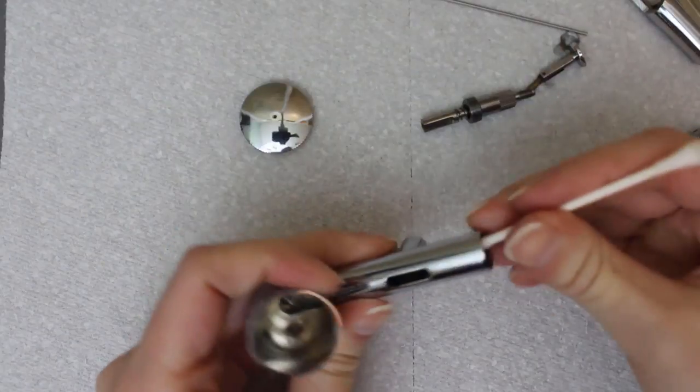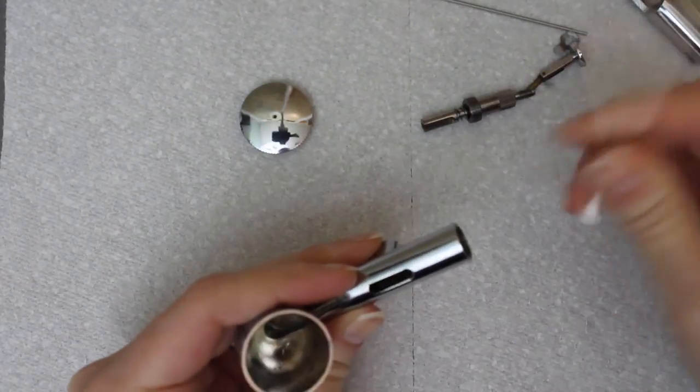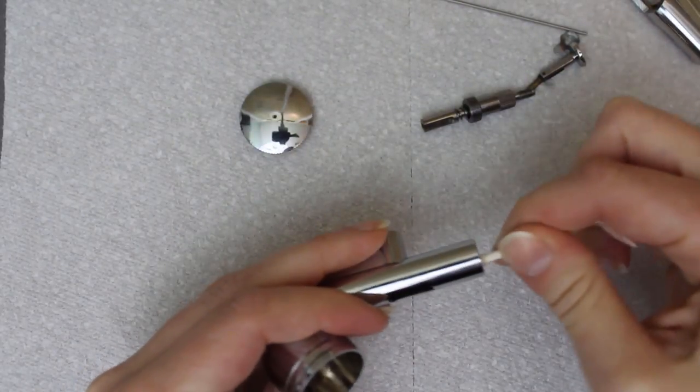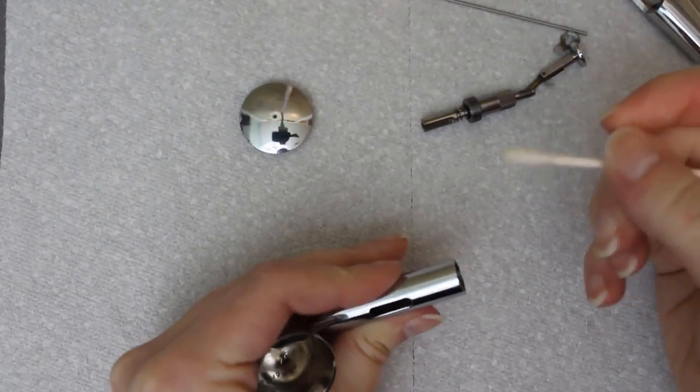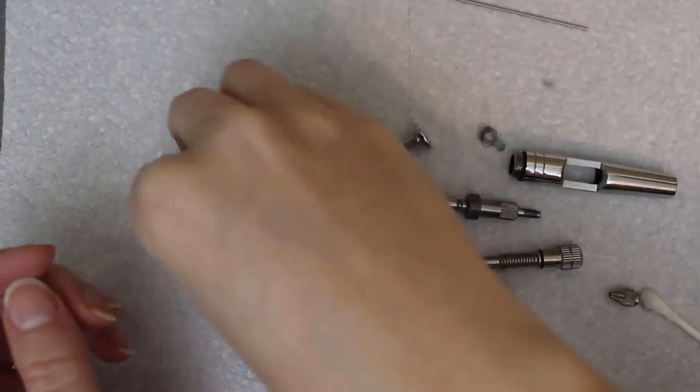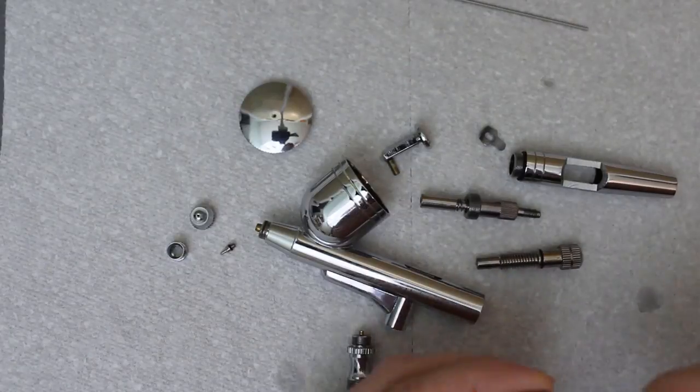The brushes are great for cleaning the inside, but sometimes they don't reach everything. Following up with a cotton swab is always a good idea. I'll make sure the nozzle is really clean while I'm at it, then it's time to reassemble the brush.